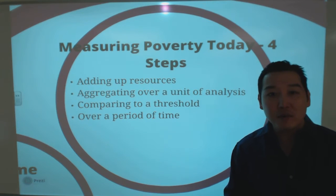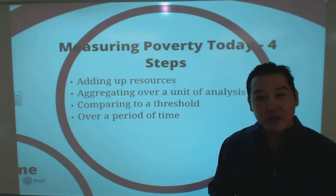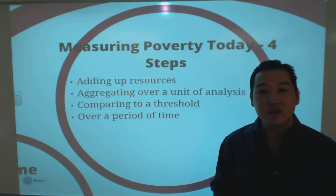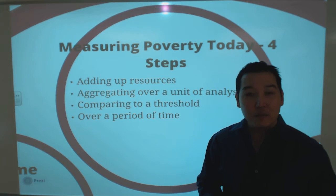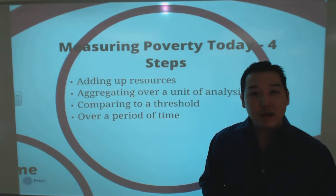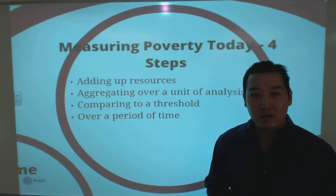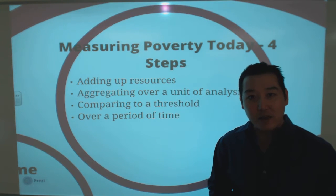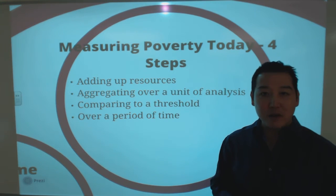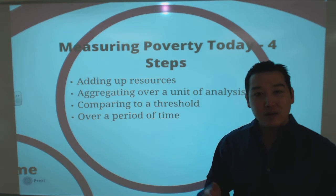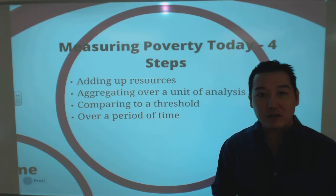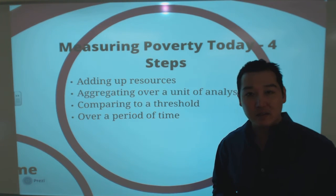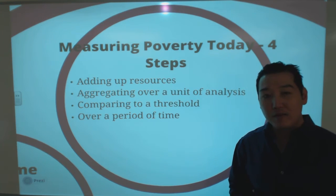The Census Bureau is the official body responsible for measuring poverty in the U.S., and they consider four factors. First, what type of resources to count — income, assets, health insurance, EITC benefits? Second, the unit of analysis — family, household, or individual? Third, the appropriate threshold or cutoff. Fourth, the appropriate time frame — annual, monthly, or long-term? These four factors guide the Census Bureau's official poverty estimates.